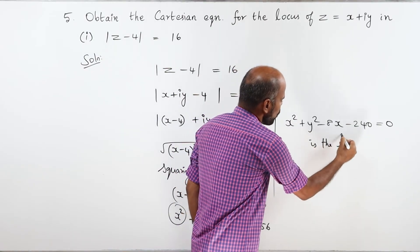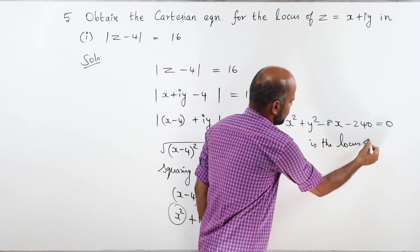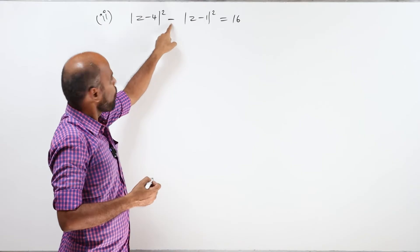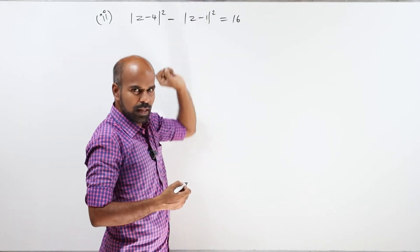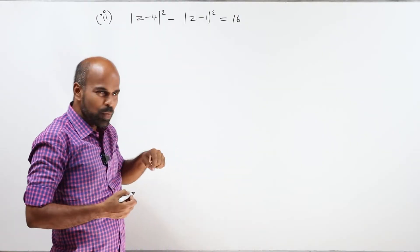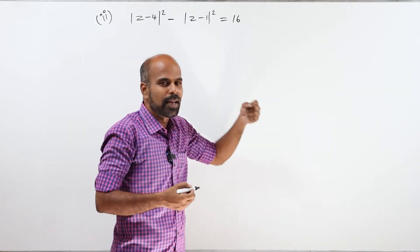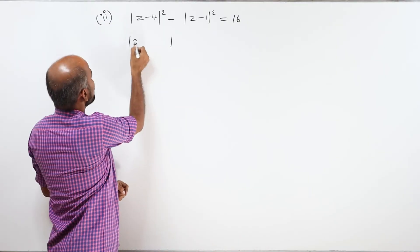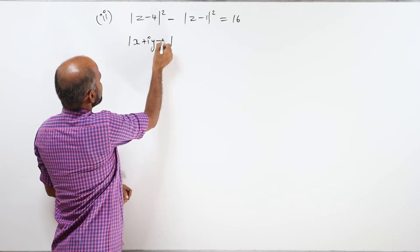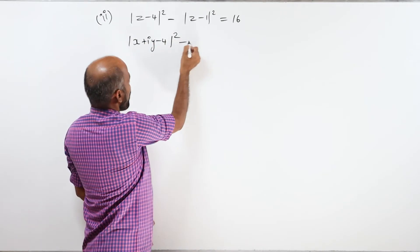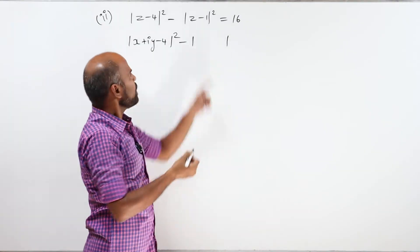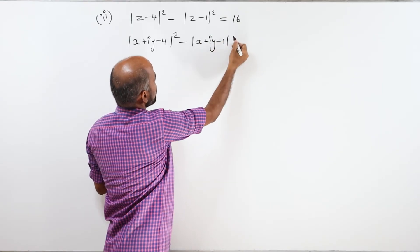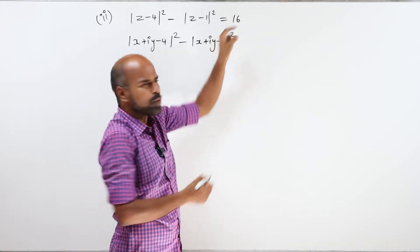This is the required locus of z for the first part. Now the second subdivision: modulus of z minus 4, whole square, minus modulus of z minus 1, whole square, equal to 16.